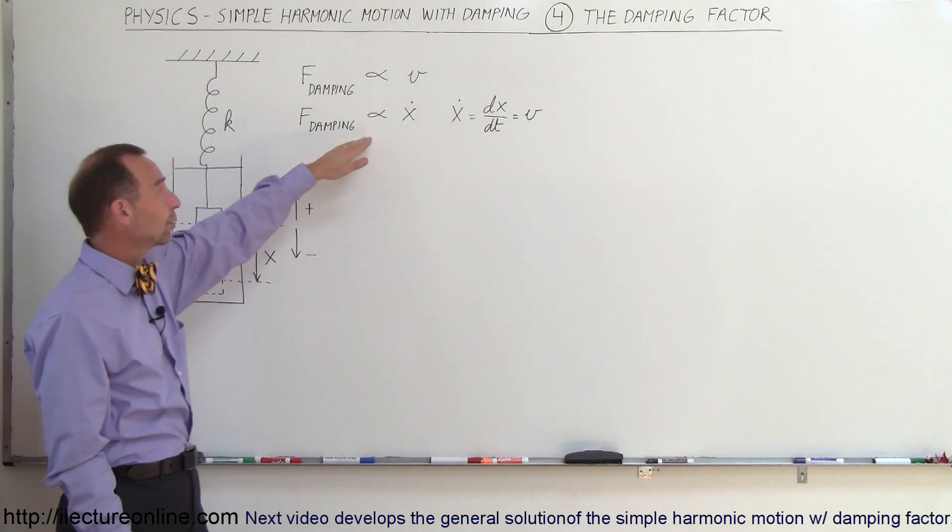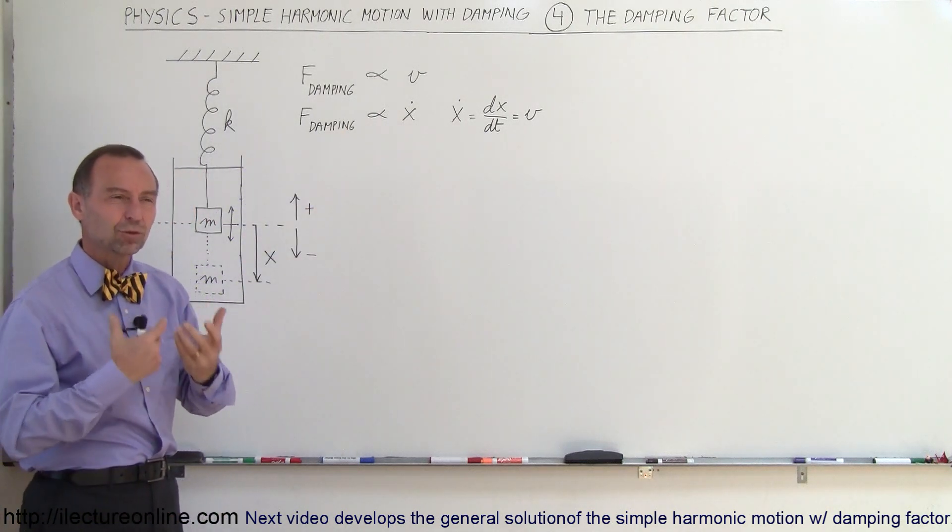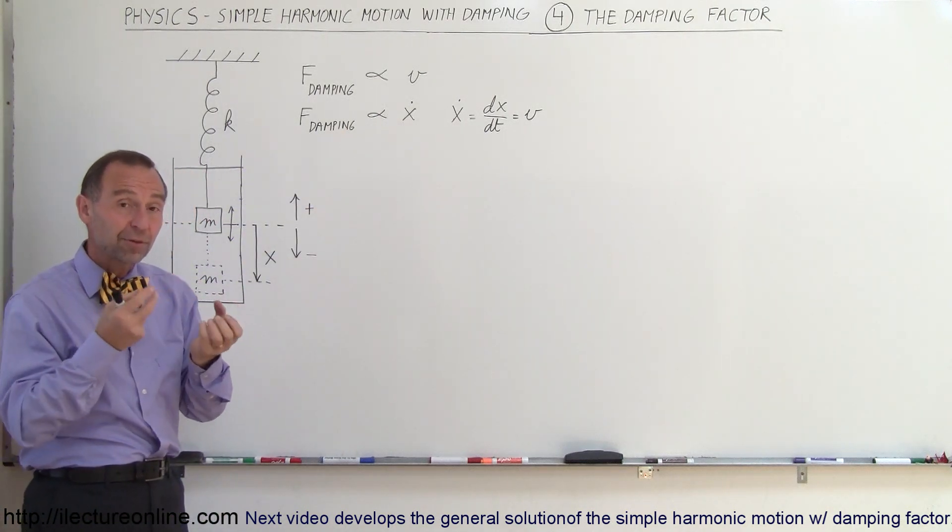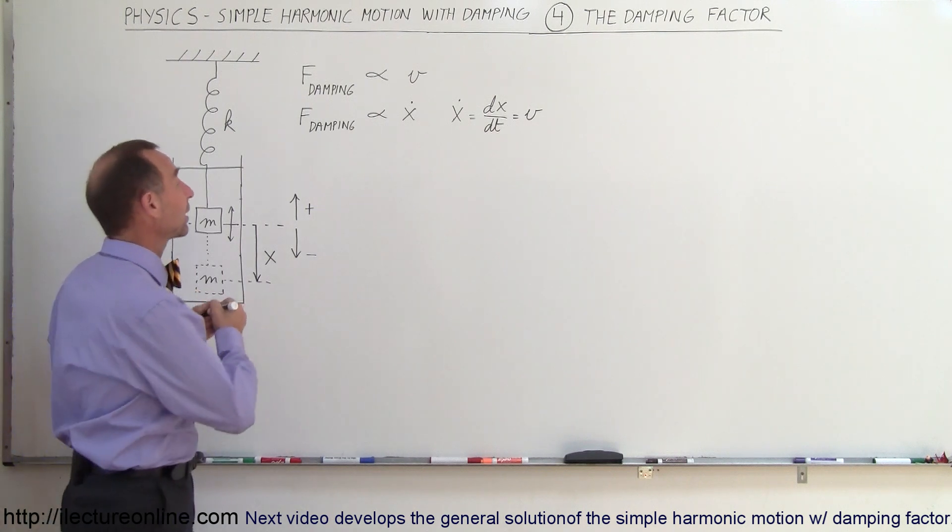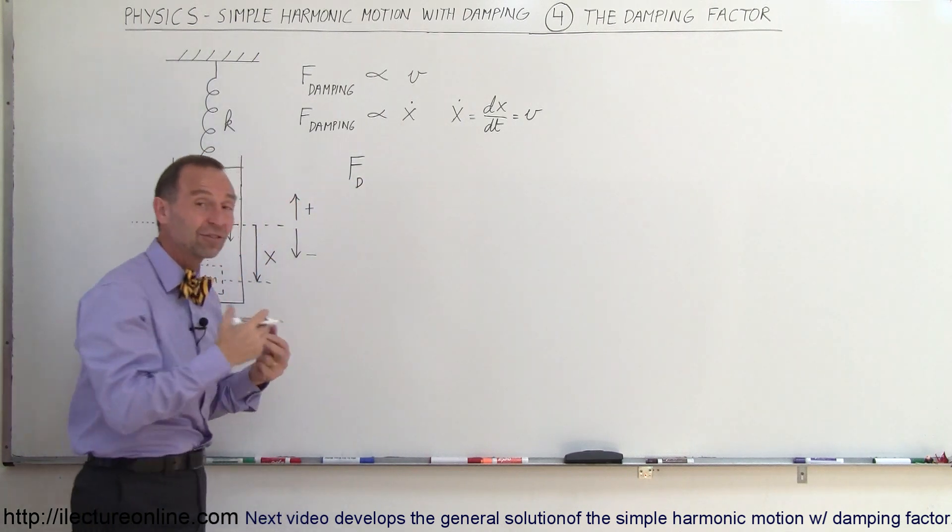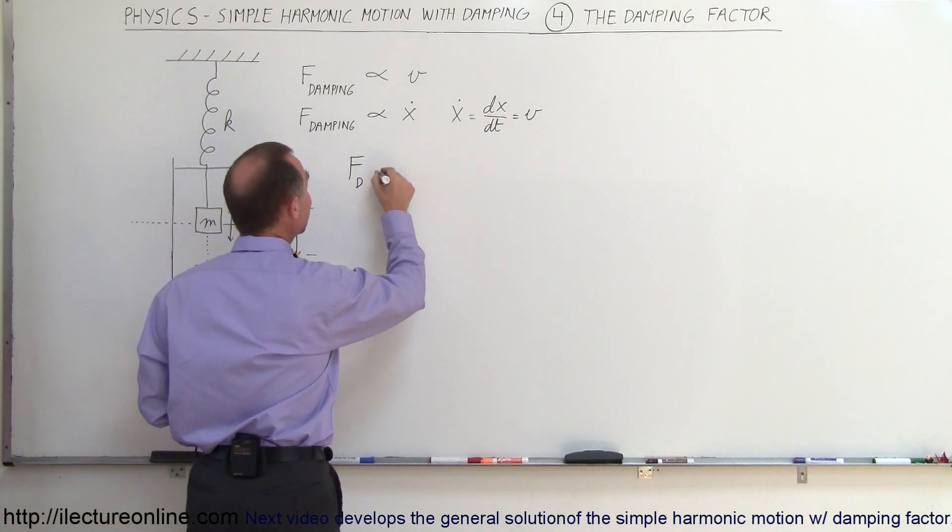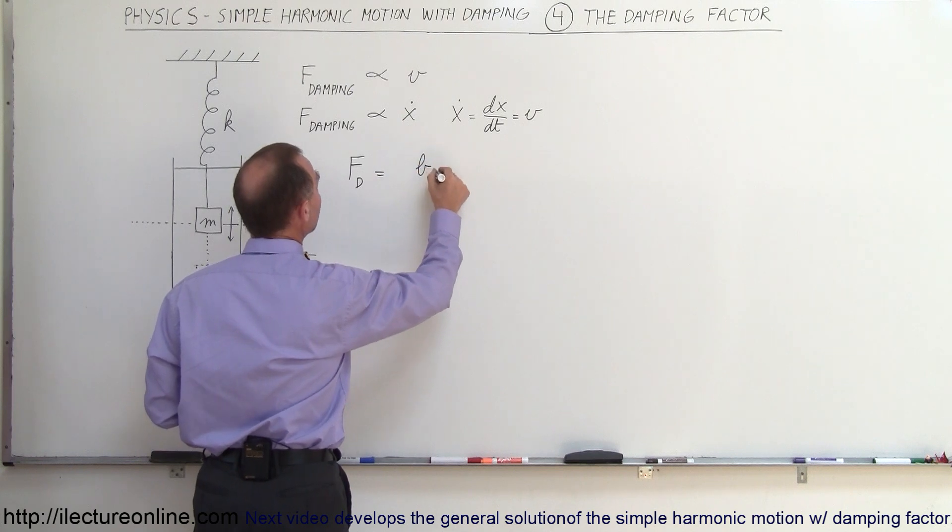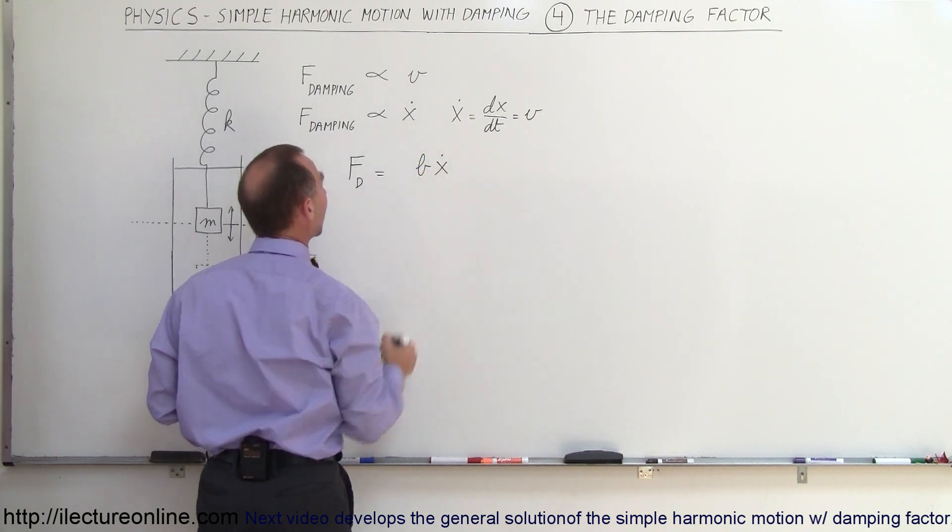If we're going to turn this into an equation, we have to have some constant that represents the viscosity of the fluid. One way to represent that would be to say that the force of the damping, F sub D, is going to be equal to some constant B times the velocity of the object.